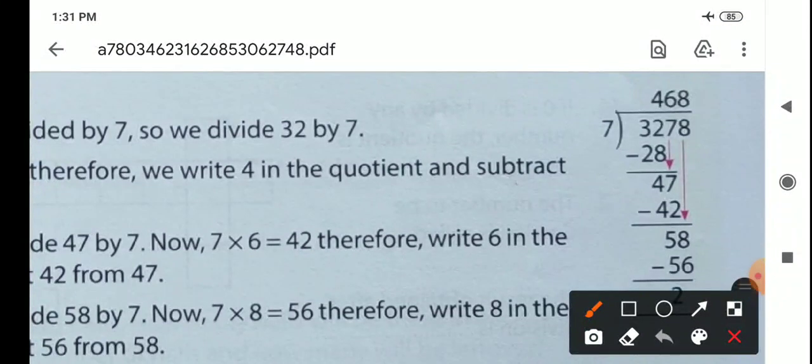3,278 divided by 7. So 3 is less than 7, so we take 32. 7 times 4 is 28. Then we subtract, we get 4.